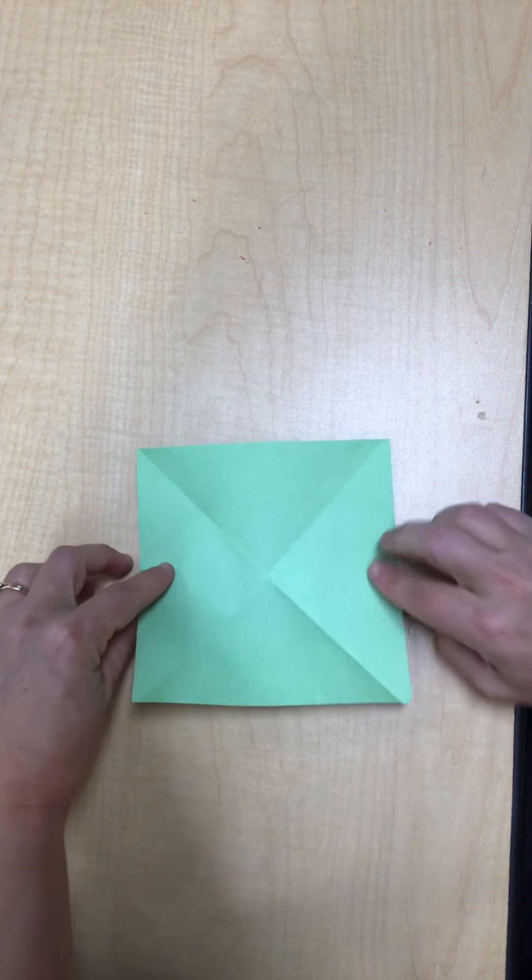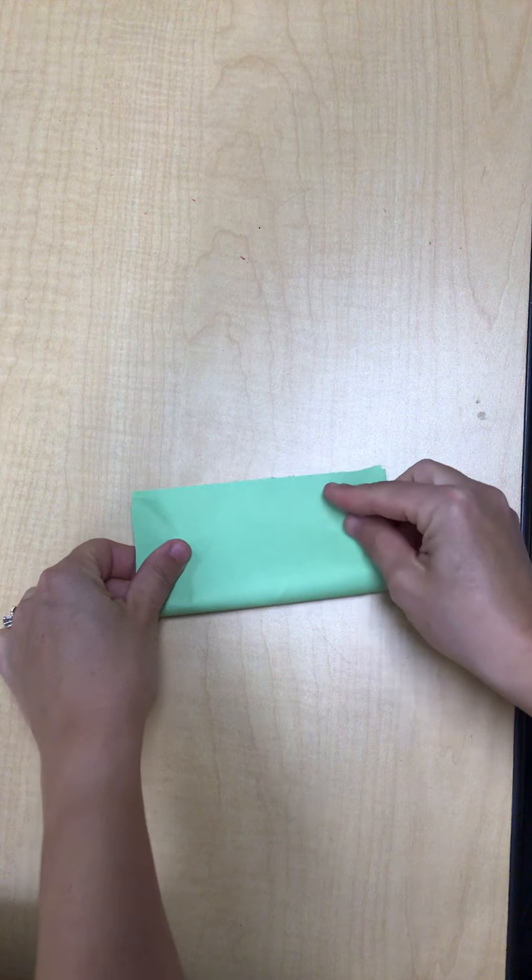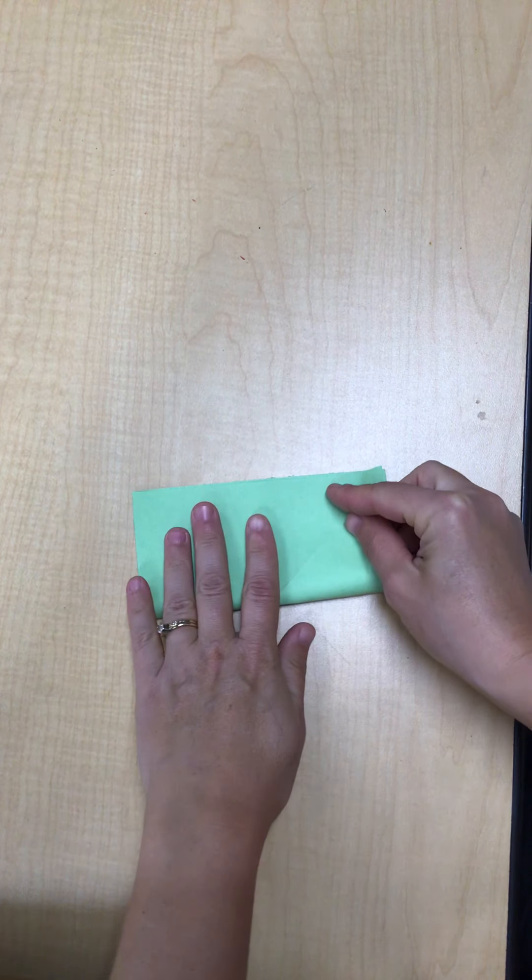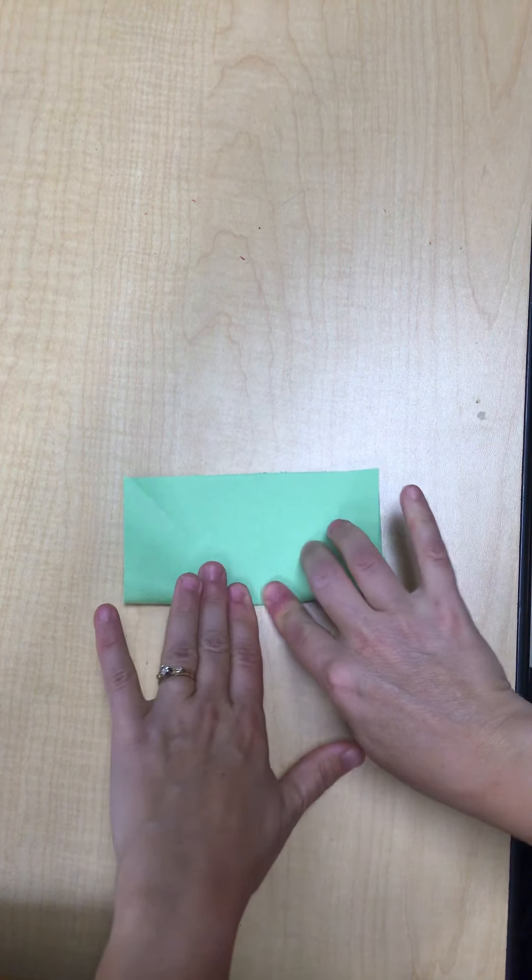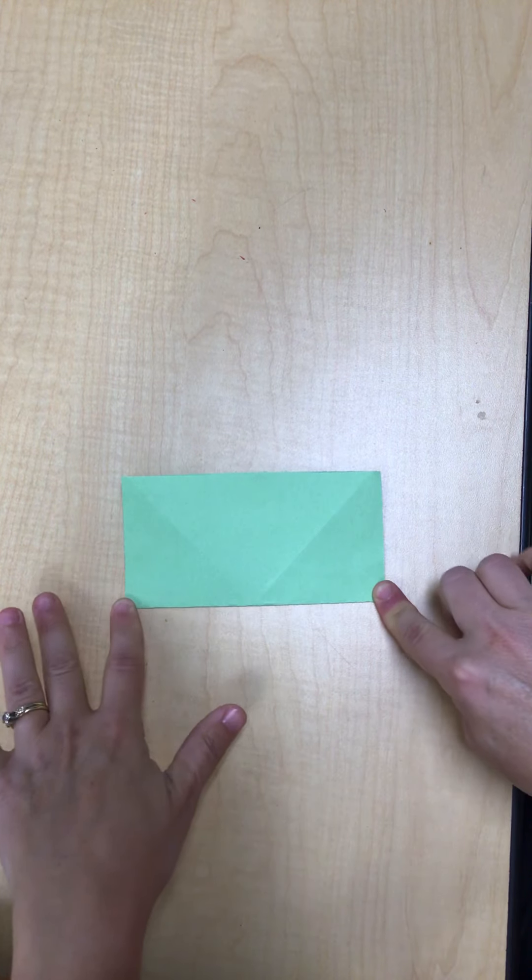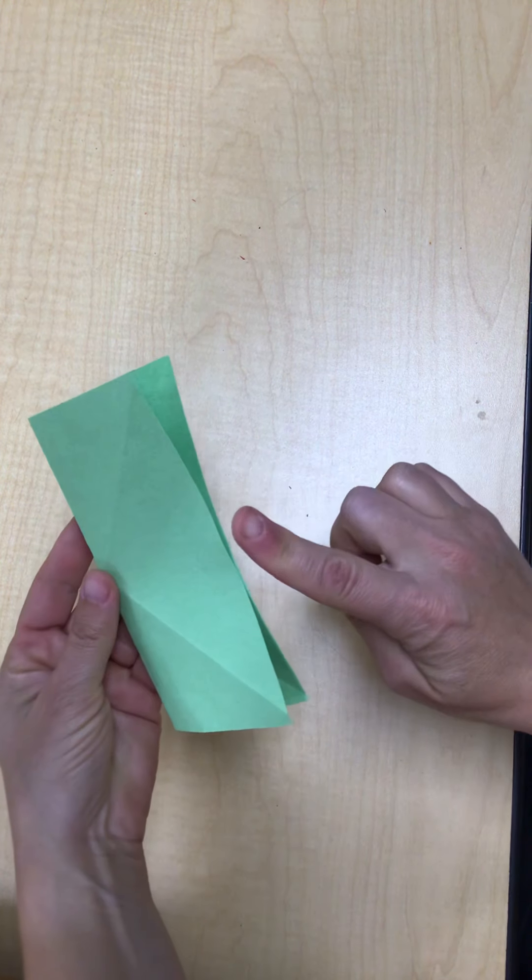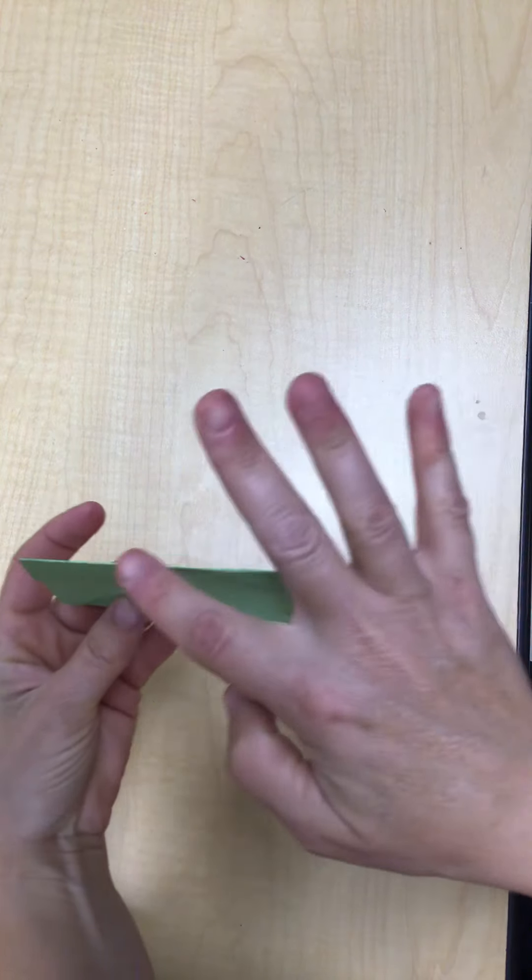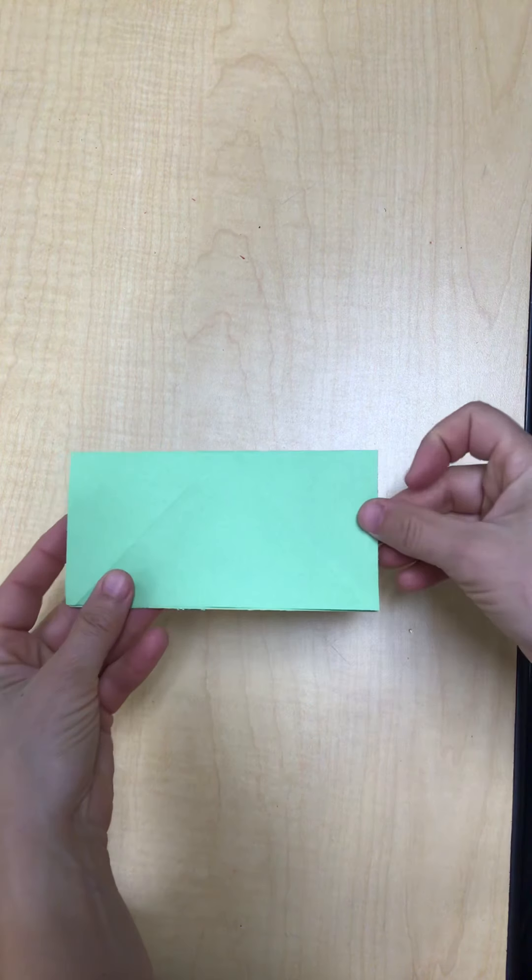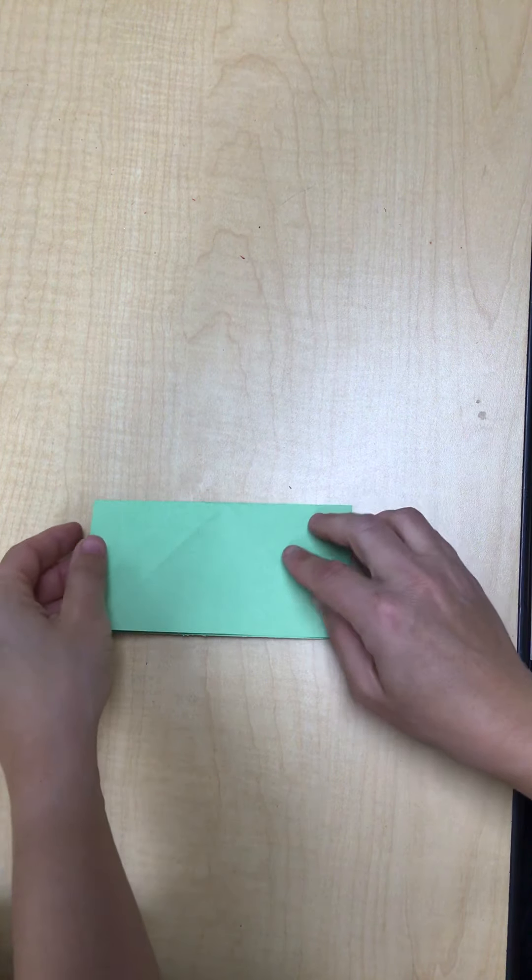Fold horizontally again just like fold three and crease. Remember the open edges face towards your body, the folded edge away from your body.